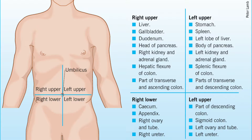Organs in the right upper quadrant include the gallbladder, right lobe of the liver, right kidney, right adrenal gland, duodenum, part of the pancreas, part of the stomach, and part of the transverse and ascending colon.